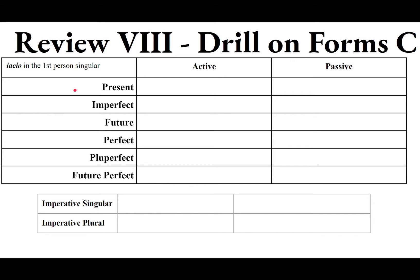We are to synopsize the following verbs, giving the forms of IACIO in the first-person singular for the six tenses, as well as the imperatives. To start, you first must know the principal parts: IACIO, IACERE, IECI, IACTUS — to throw.